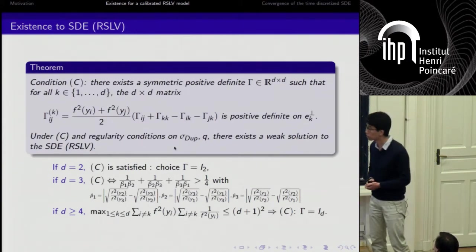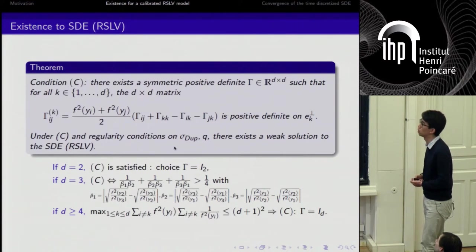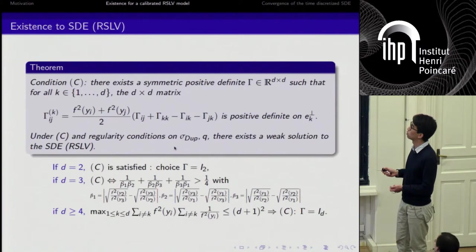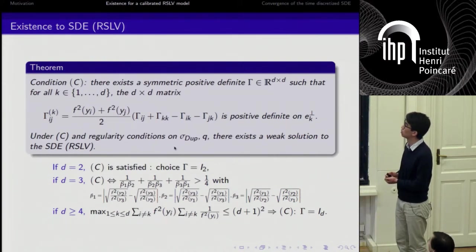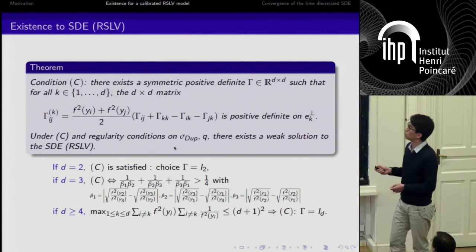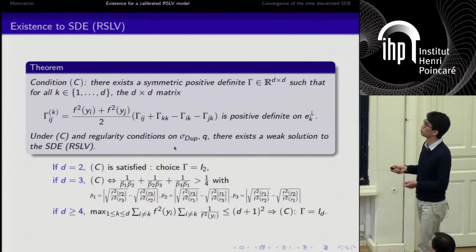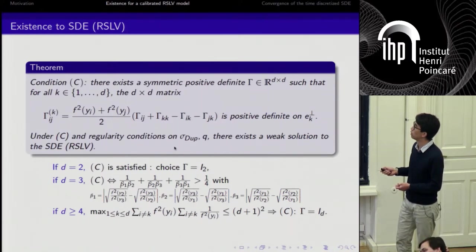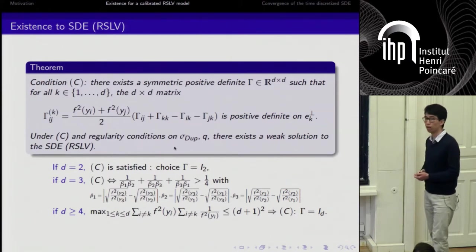The first result is that there exists a weak solution to this SDE, RSLV, provided that we have some regularity conditions, some soft regularity conditions on sigma Dupire, boundedness, uniform boundedness on q, and another kind of abstract condition on a certain matrix gamma. It takes some time to give sufficient conditions so that condition C is satisfied. If d equals 2, actually C is always satisfied and it's sufficient to take gamma equal to identity. Then we have some other conditions for d bigger than 2. But morally what it says is that if the range of f squared of y_i is not too large, actually we can ensure condition C.